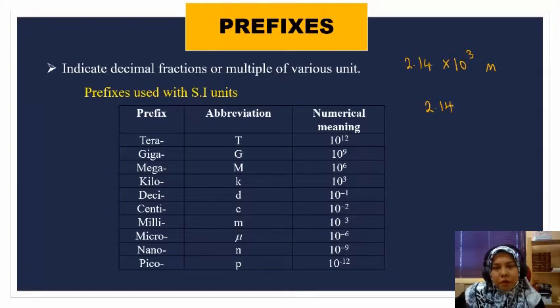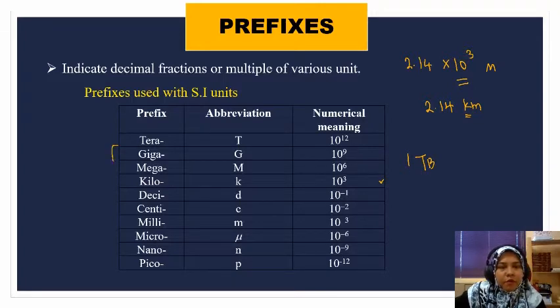Kilo here means 10 power of 3. These are also used in daily life. For example, in your pendrive, they use gigabyte and even now they have terabyte, 1TB. So these are the names for the prefixes and these are the meanings.